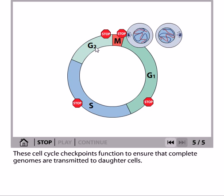After G2, the cell enters the spindle assembly checkpoint, which monitors not only chromosomes but also the microtubules and spindle that have been produced. The attachment of the spindle to chromosomes is tightly monitored in this phase, and only after passing all stages can the cell proceed to division. All steps are tightly controlled and finely monitored, because any defect in these checkpoints leads to malfunctioning in the production of new daughter cells. The actual goal is to produce the same type of daughter cell from the mother cell.